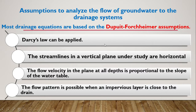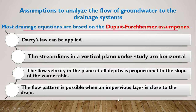The flow velocity in a plane at all depths is proportional to the slope of the water table — this is somewhat equivalent to Darcy's law, which states velocity is directly proportional to hydraulic gradient. The flow pattern is possible when an impervious layer is close to the drain. These are all the assumptions formulated by Dupuit and Forchheimer. Before writing any equation or derivation, we must write the assumptions first.